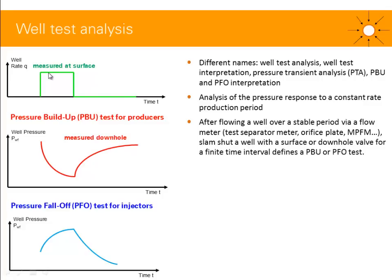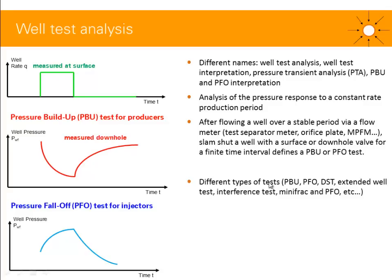Basically, we measure the rate at surface under stable production via different methods — for example, a test separator meter, an orifice plate for gas, or an MPFM (multi-phase flow meter) — and then we shut the well with a surface or downhole valve for a finite time interval. For a producer, pressure decreases during production (drawdown) and goes up during shut-in (pressure buildup, PBU). For an injector, pressure decreases during shut-in, which is called a pressure fall-off (PFO) test.